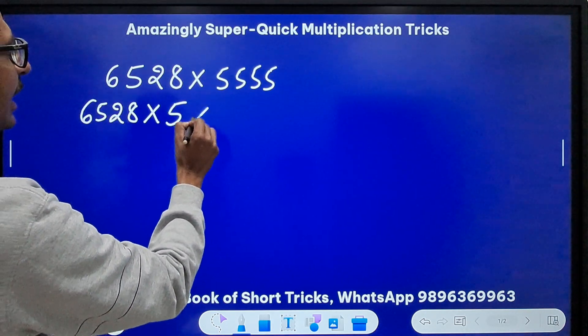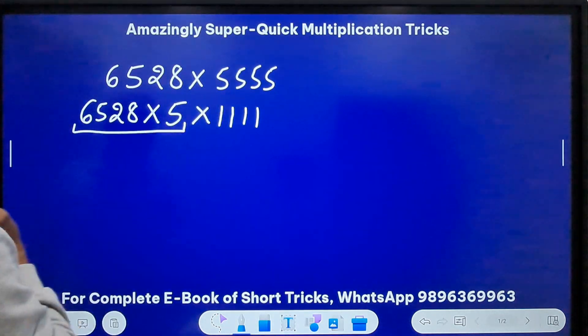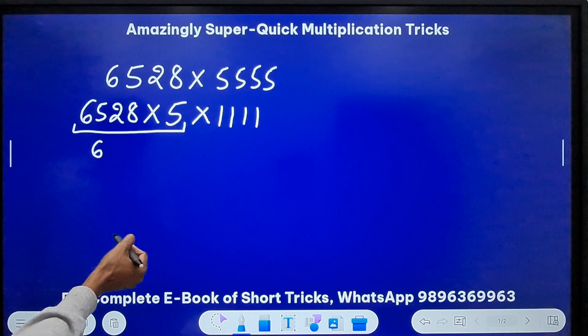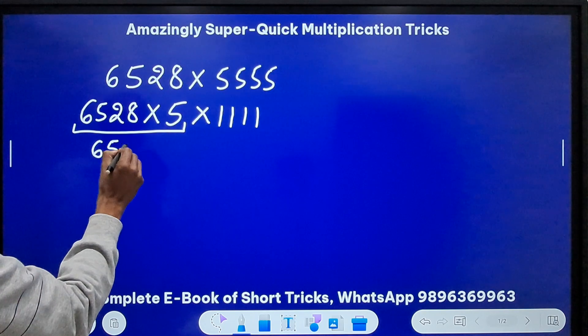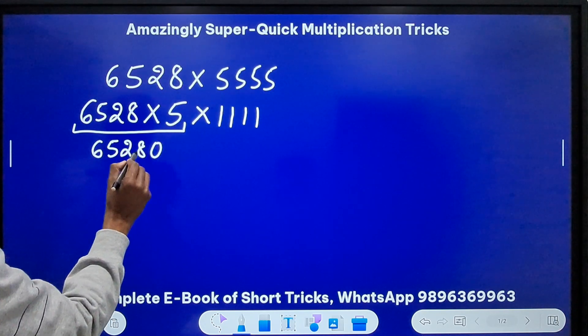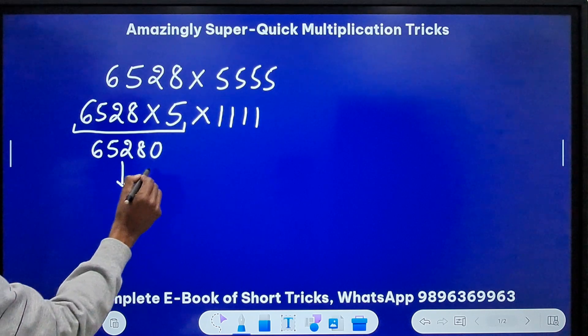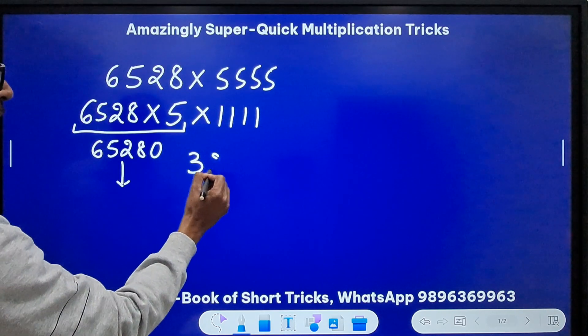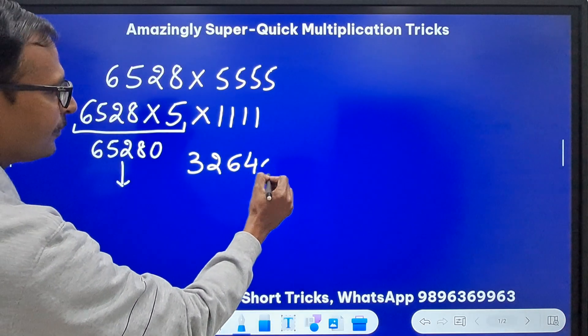This is mental math, you don't have to write it. I am writing it to explain it to you. So 6528, put a zero and take half of this number. What is half of this number? Three, then two, then twelve means six and a four, four zero.